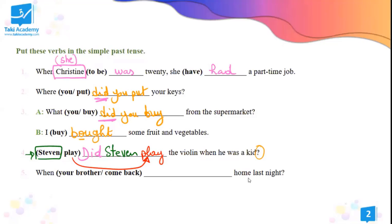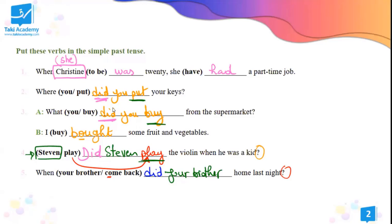When your brother came back home last night — question again. Remember, we do not conjugate the verb in the question. It has to be a bare infinitive, non-conjugated. So: when did your brother — this is the subject — just like 'play', 'buy', and 'put', they're all non-conjugated. So: when did your brother come? Just the way it is.